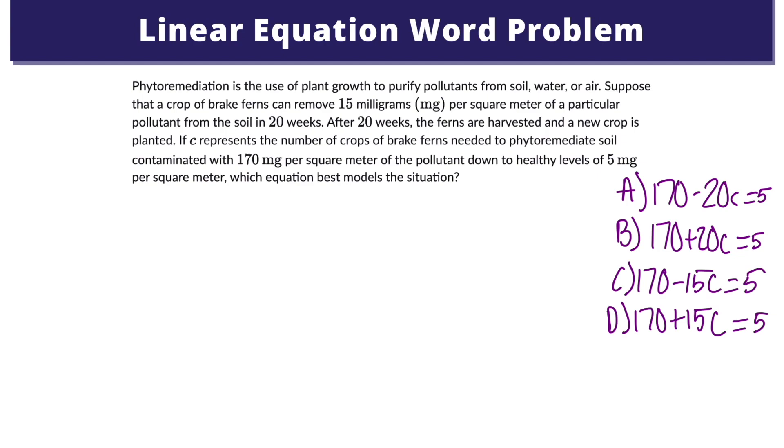In this fourth example, each crop reduces the pollutant by 15 milligrams per square meter. The amount of pollutant removed by C crops would be 15C milligrams per square meter. This amount should be subtracted from the existing amount. So we are left with 5 milligrams of the pollutant per square meter. When we write an equation to represent that, it would be 170 minus 15C equals 5. So from here, we are easily able to determine our correct answer, which is C.